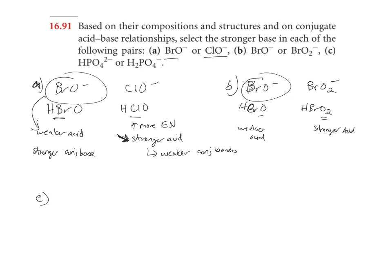Letter C. We have HPO₄²⁻ versus H₂PO₄⁻. Which of these is the stronger base? This one as an acid, if we were going to draw it as an acid, we add an H to it. So it would be H₂PO₄⁻ when you add an H⁺, the charge increases by 1. This one, H₃PO₄, is 0 because we increased by 1.